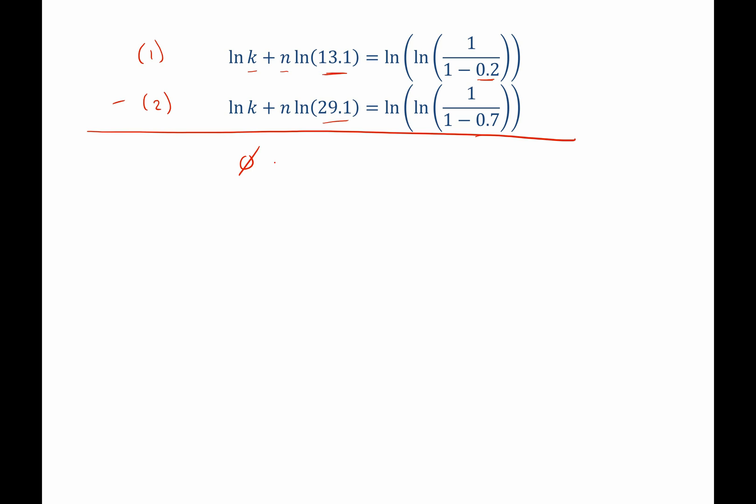Then we have n and we have negative 0.7981 equals negative 1.685. So all I've done is I've just plugged in what the values are for natural log of 13.1, natural log of 29.1 and so forth.